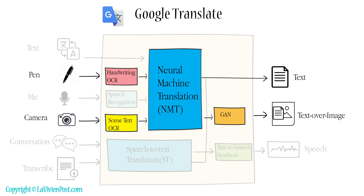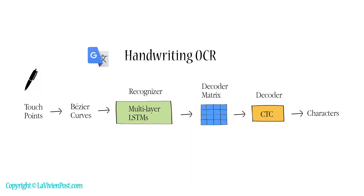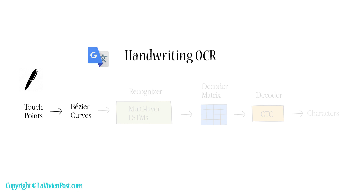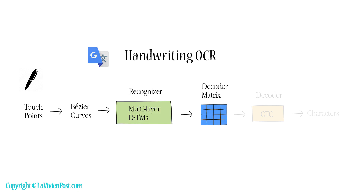Google Translate provides handwriting and instant camera translation, both powered by optical character recognition. For handwriting OCR, the first step is to convert the sequence of points into a sequence of cubic Bezier curves. Next, a multi-layer recurrent neural network converts the curves into a matrix with a probability distribution over all possible letters. Then the CTC decoder outputs the characters.